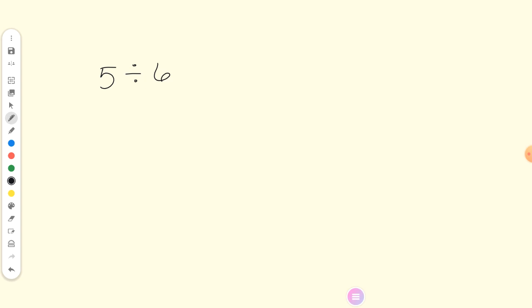Every fraction in the world has a decimal value. We're going to learn later how to convert between the two. But for this, I could divide it out. To do 5 divided by 6, I add a decimal point and then add zeros as needed. How many times does 6 go into 50? 8, because 6 times 8 is 48. Then I subtract and get 2.